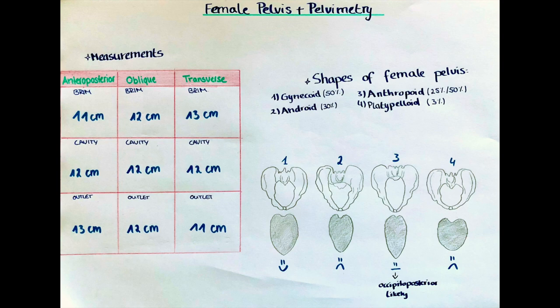The oblique diameters are measured between the sacroiliac joint and the iliopectineal eminence and usually measure 12 cm. The transverse diameter is measured between the widest points of the iliopectineal lines and should measure 13 cm.